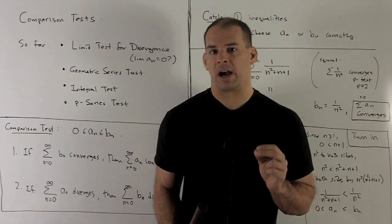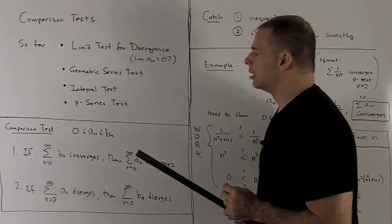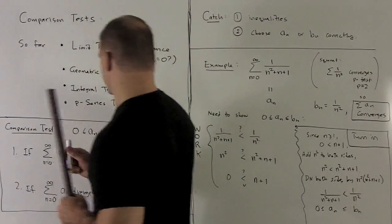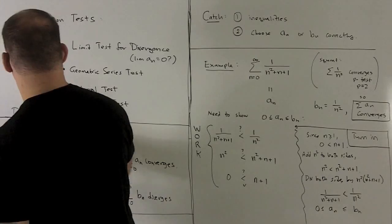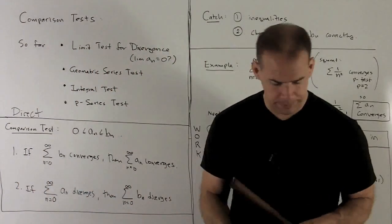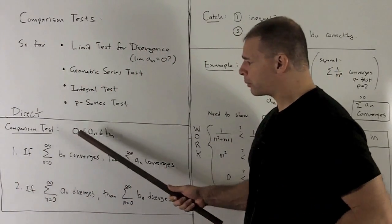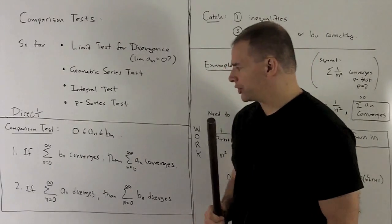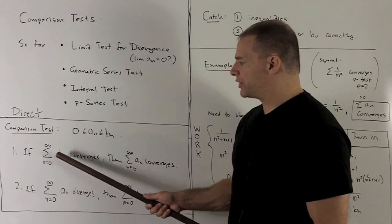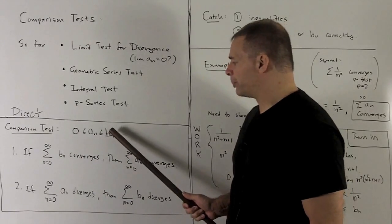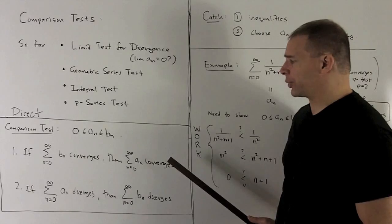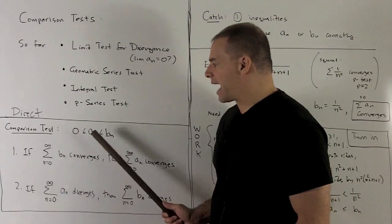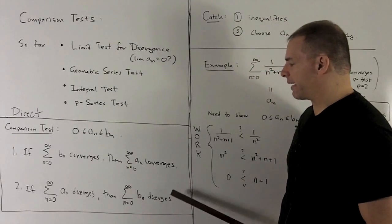Let's take a look at what the comparison tests are going to do for us. My first comparison test is called the direct comparison test. We have two sequences, a_n and b_n, and we consider the series that go with both of them. First statement: if the series for b_n converges, then the series for a_n will also converge. Second: if the series for a_n diverges, then the series for b_n is going to diverge.